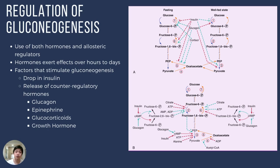Now let's go to the regulation of gluconeogenesis. Glycolysis and gluconeogenesis occur through reciprocal regulation. When glycolysis is active, gluconeogenesis is slowed down. When gluconeogenesis is active, glycolysis is slowed down. For the regulation of gluconeogenesis, the body utilizes hormones and allosteric regulators. Allosteric regulators are substances that can directly affect the activity of an enzyme by binding to it at a different site from the active site.